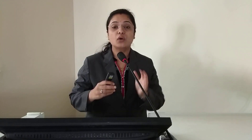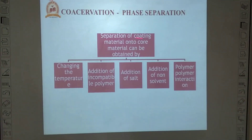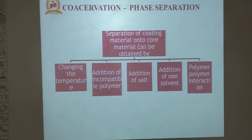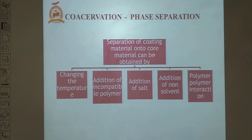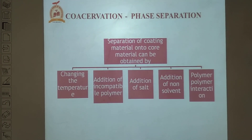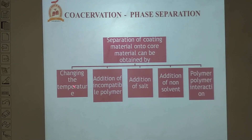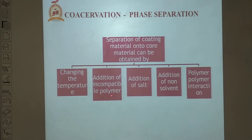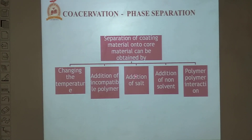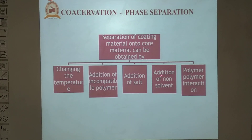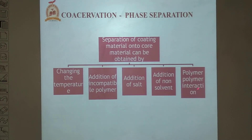There are five different methods of phase separation and coacervation by which we can separate the coating material around the core material: first, change in temperature; second, addition of incompatible polymer; third, addition of salt; fourth, addition of non-solvent; and fifth, polymer-polymer interaction.